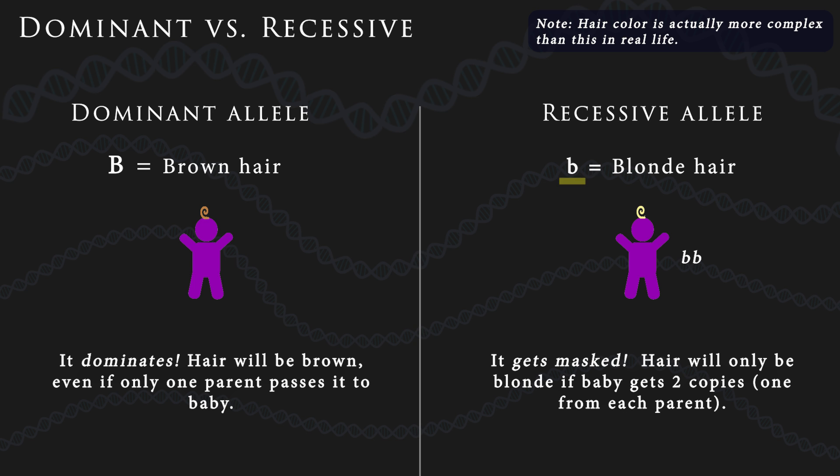To keep things simple, we usually use the same letter for both alleles of a gene — uppercase for dominant, lowercase for recessive.